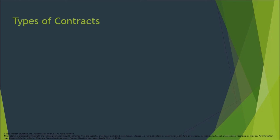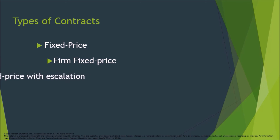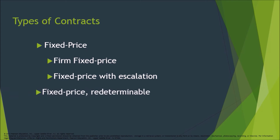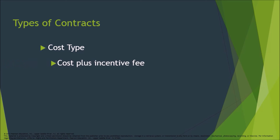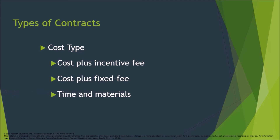Types of contracts — Fixed price: Firm Fixed Price, Fixed Price with Escalation, Fixed Price Redeterminable, and Fixed Price Incentive. Cost type contracts include: Cost Plus Incentive Fee, Cost Plus Fixed Fee, and Time and Materials.